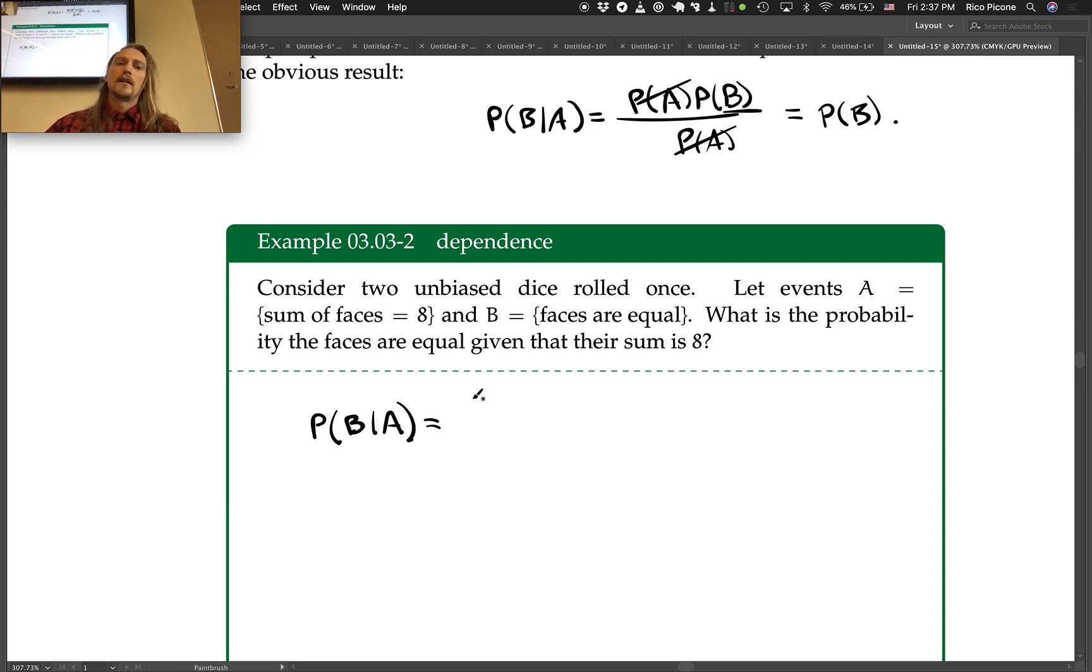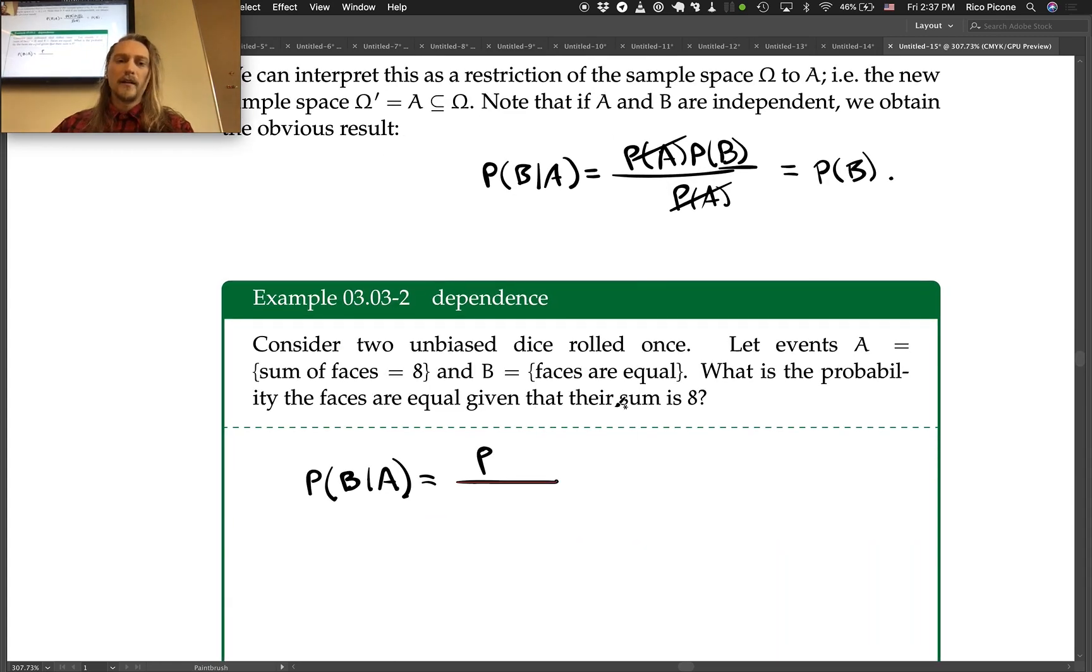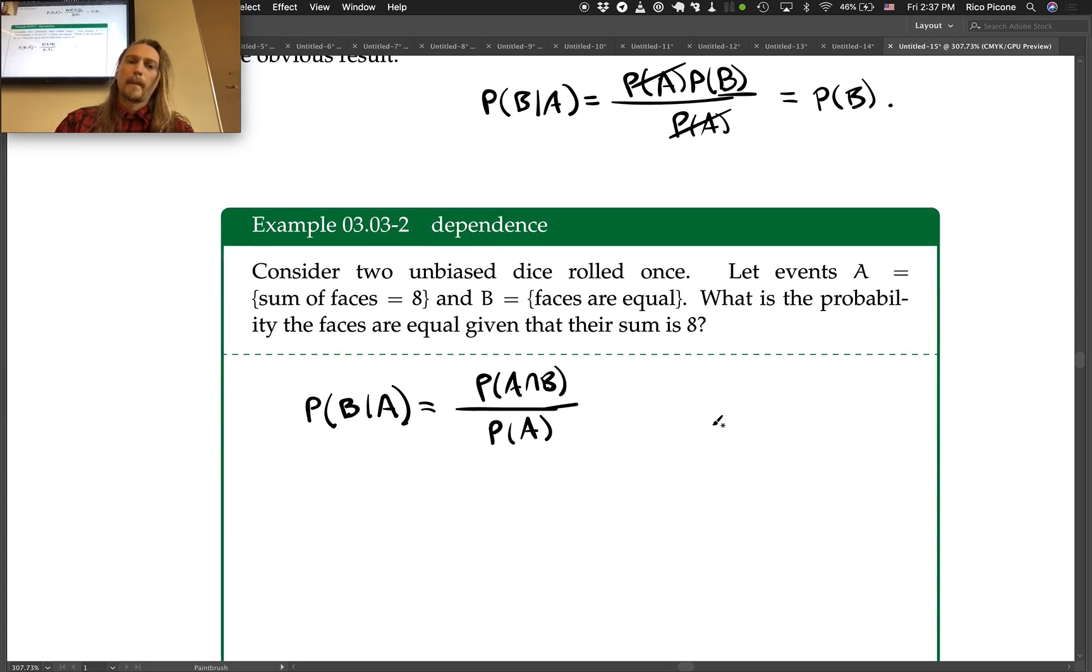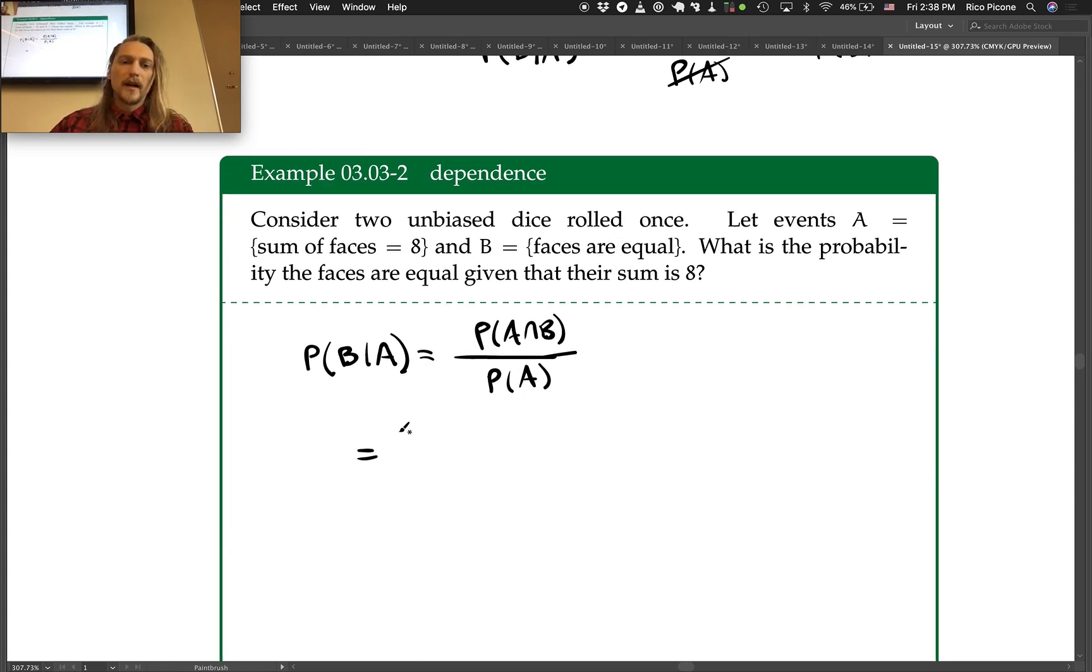We can use our formula: probability of A intersect B divided by probability of A. So we can simply take a look at the possibilities.